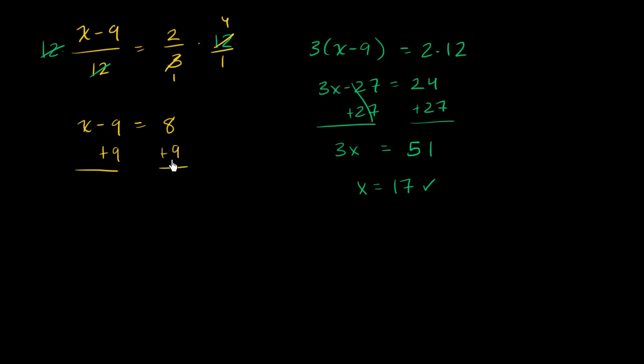So the fun of algebra is that as long as you do something that's logically consistent, you will get the right answer. There's no one way of doing it. So here you get x is equal to 17 again. And you could also multiply both sides by 12 and both sides by 3, and that would be functionally equivalent to cross-multiplying.